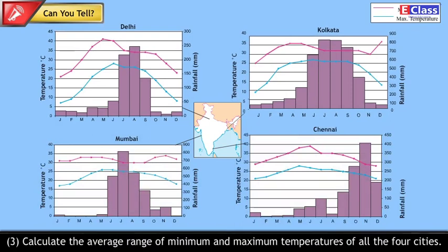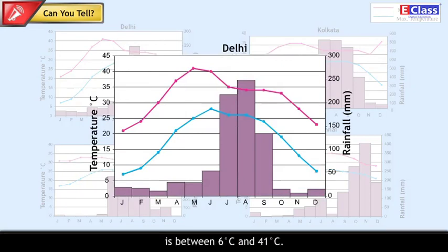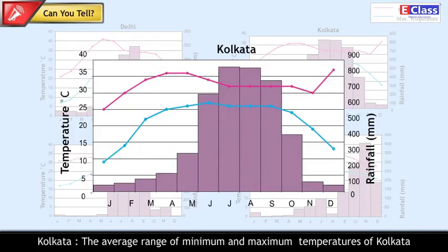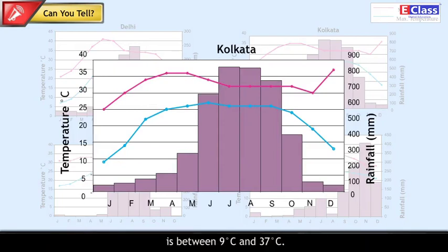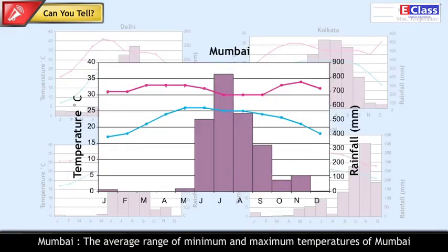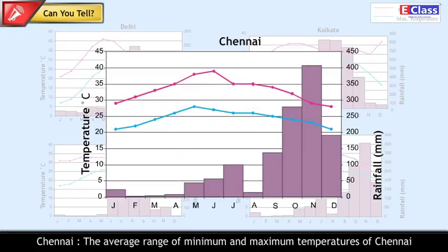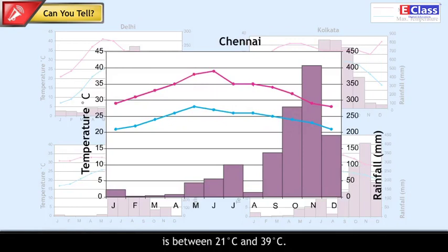Calculate the average range of minimum and maximum temperatures of all four cities. Delhi: between 6°C and 41°C. Kolkata: between 9°C and 37°C. Mumbai: between 16°C and 34°C. Chennai: between 21°C and 39°C.